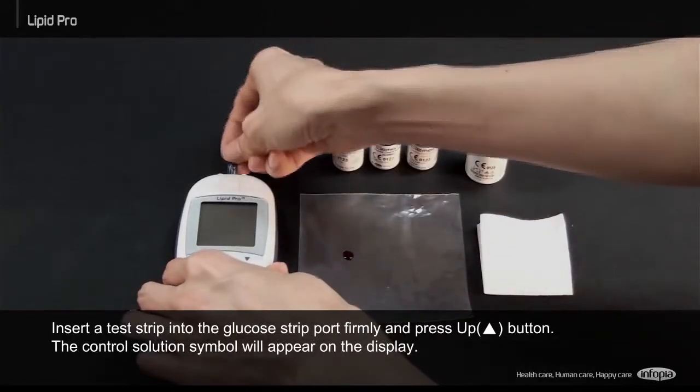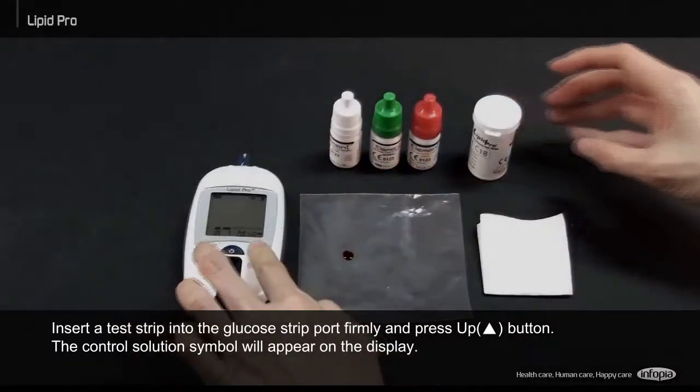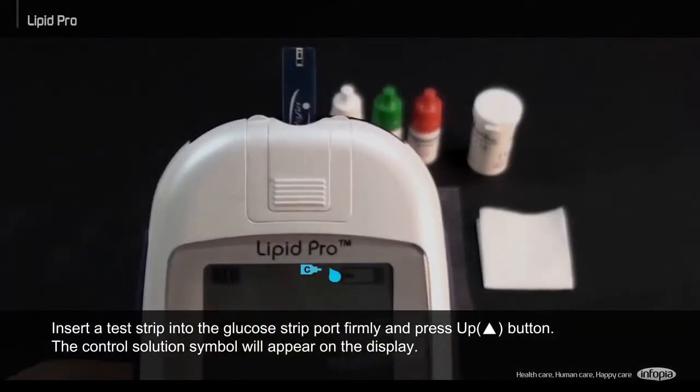Insert a test strip into the glucose strip port firmly and press up button. The control solution symbol will appear on the display.